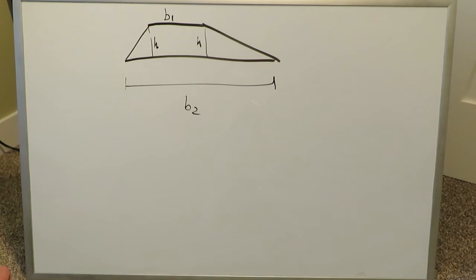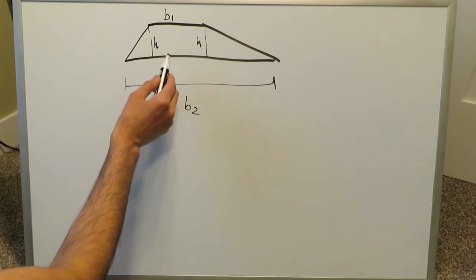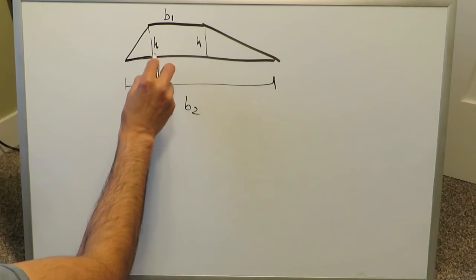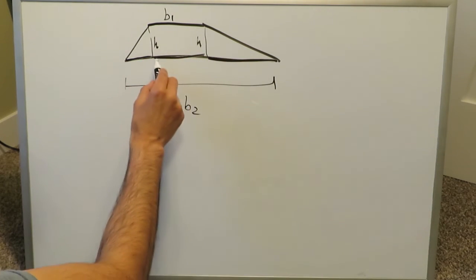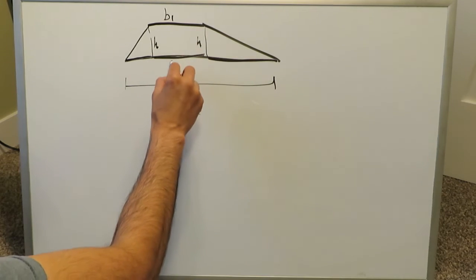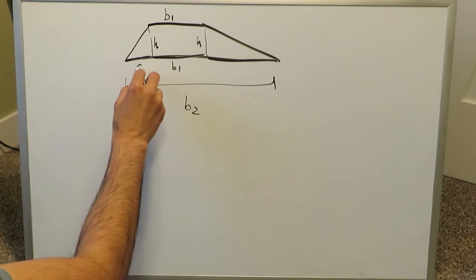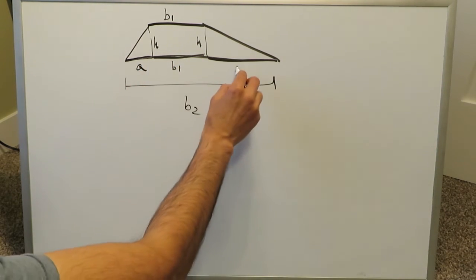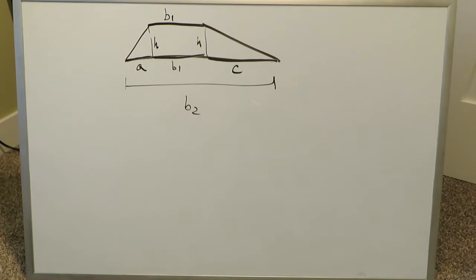But if you look at this lower base, b2, it's comprised of three different segments. From here to here, and then from here to here, and then from here to here. This segment right here must be equivalent to b1. You can arbitrarily just call this segment here a, and you can call that c.